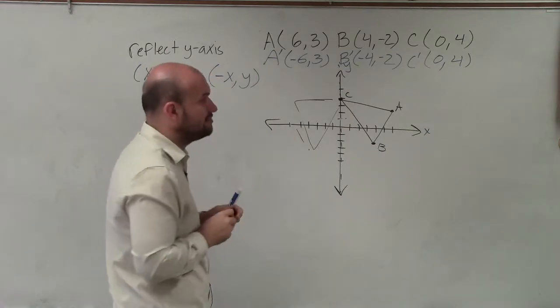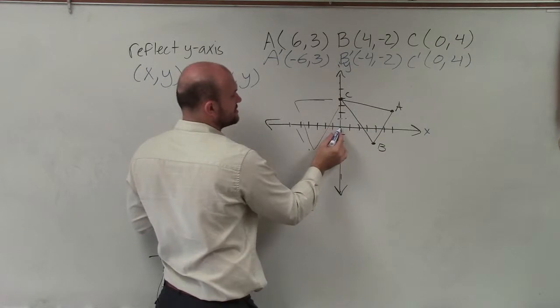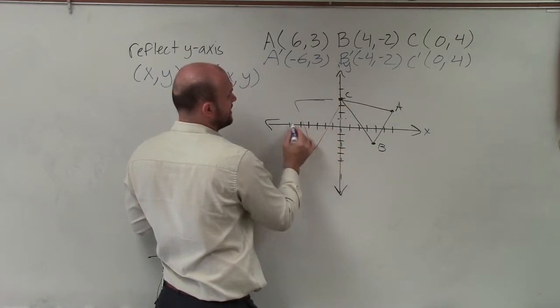All right, so let's actually graph the points, though, of our new image following the rule that we use. So a is now at negative 6, 3, 1, 2, 3, 4, 5, 6, 3.